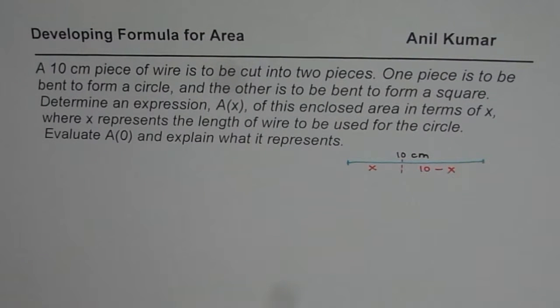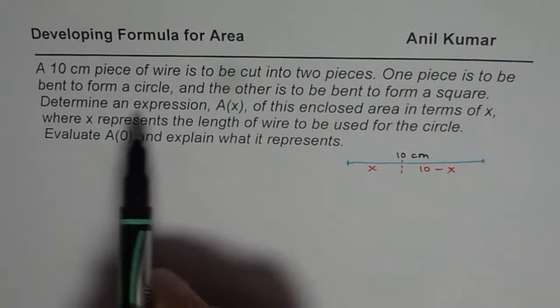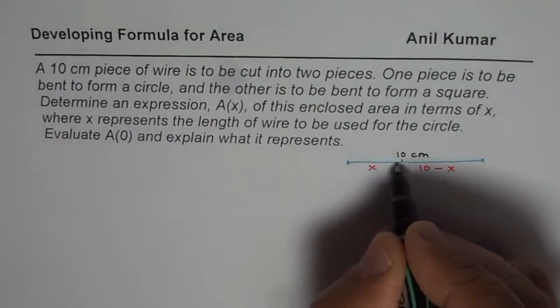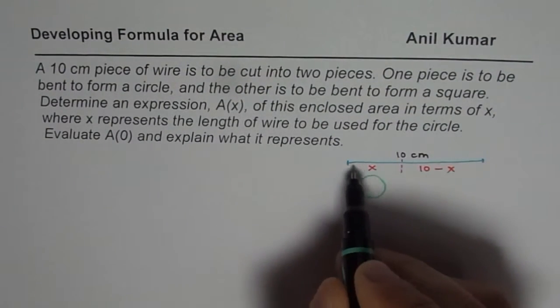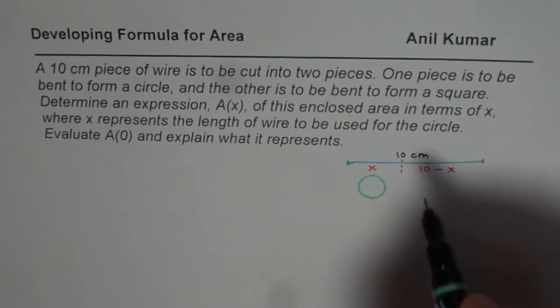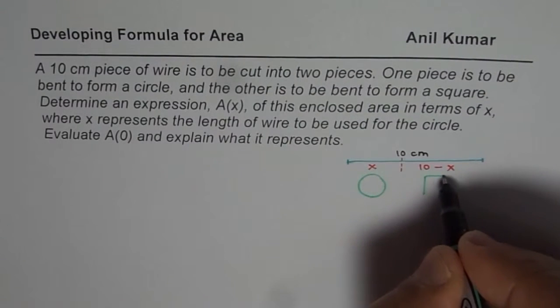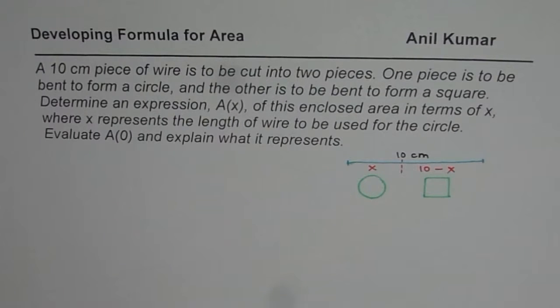Now out of these two pieces, from one piece we will make a circle. So we need to find area of two figures, one is circle. So we make a circle here. This circle is made from this length of the wire. And from the second piece we will make a square here which will be made from the remaining piece of the wire.